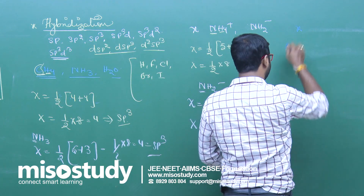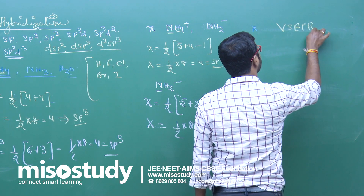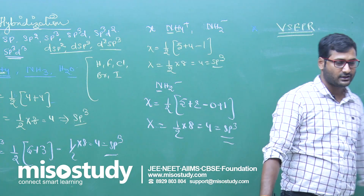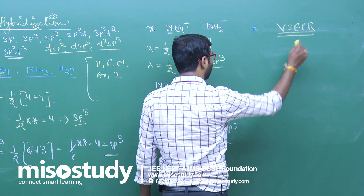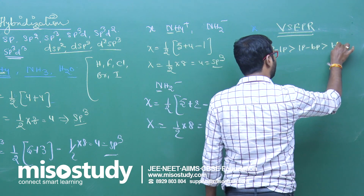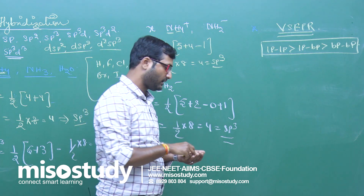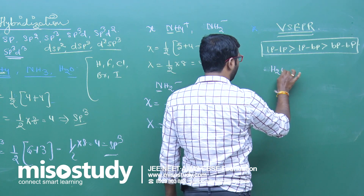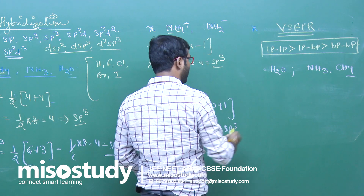Now we have VSEPR theory — Valence Shell Electron Pair Repulsion theory. This theory gives the complete shape of the molecule because it considers electron pair interactions. We know that lone pair–lone pair repulsion is greater than lone pair–bond pair repulsion, which is greater than bond pair–bond pair repulsion. For example, what is the shape of H2O, NH3, and CH4?